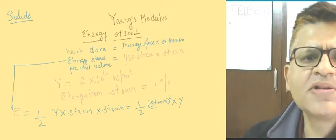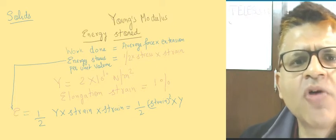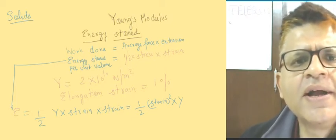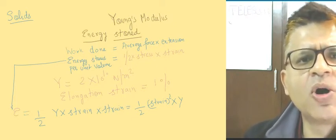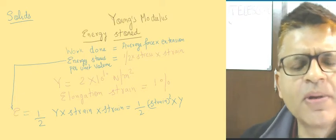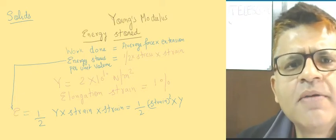You can see how the same formula of energy per unit volume has been converted into Young's modulus and strain only. The formula is half strain squared multiplied by Y.